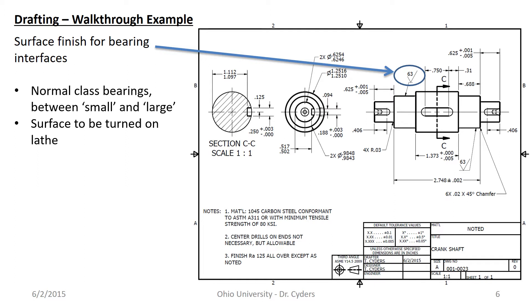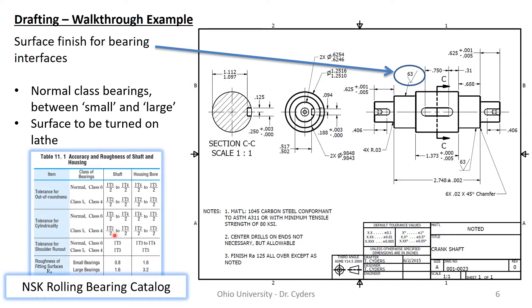And so I can go into the accuracy and roughness of shaft and housing table in the NSK rolling bearing catalog and pull off small to large bearings and it's somewhere between 0.8 and 1.6 and that's in microns. So I need to convert that to micro inches to get it into RA for my ANSI style print and so that translates to something that an RA 63 meets and it's a very easy spec.